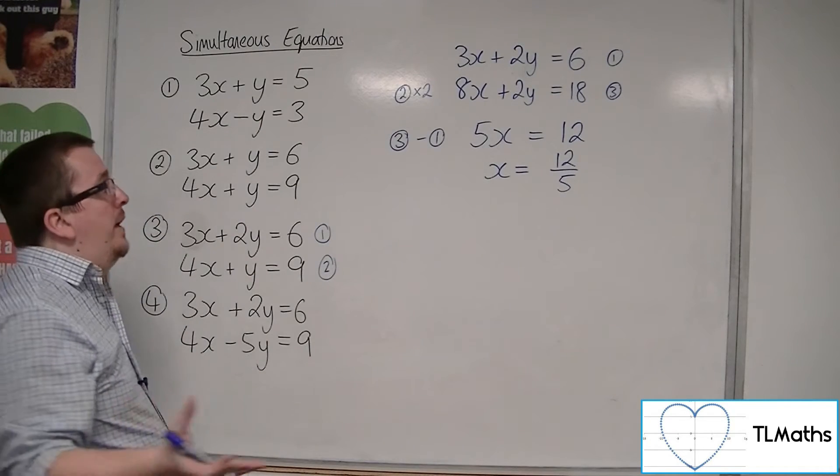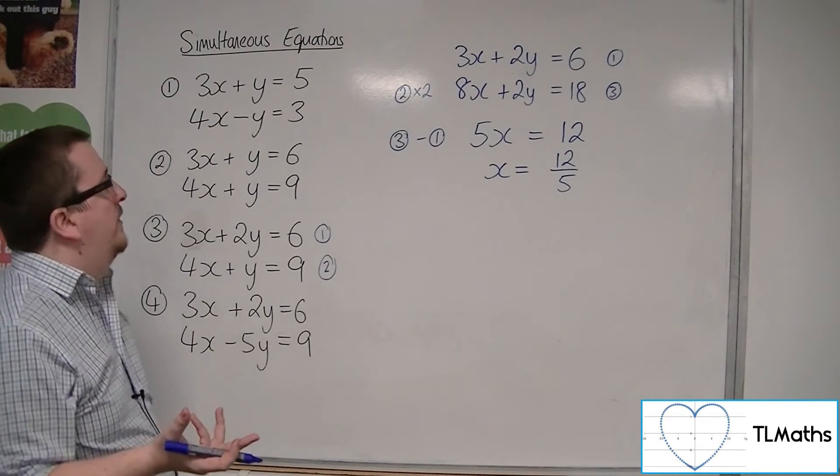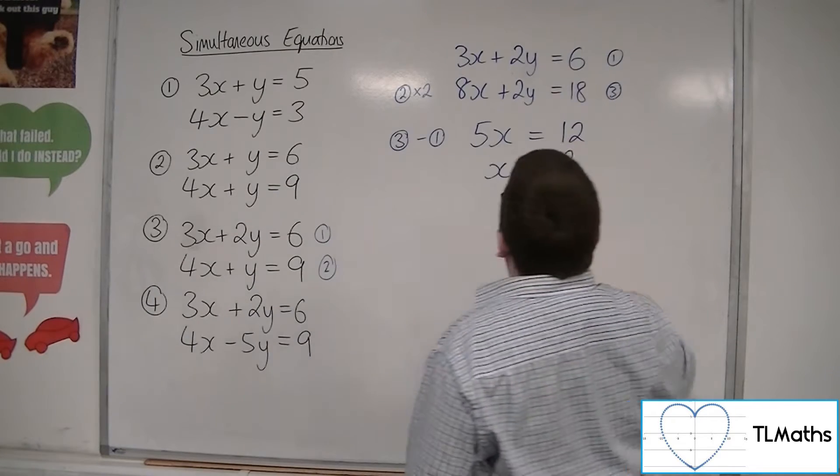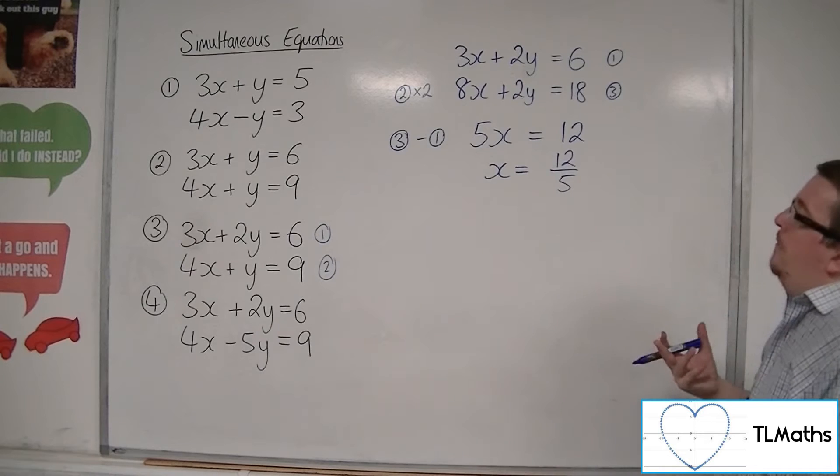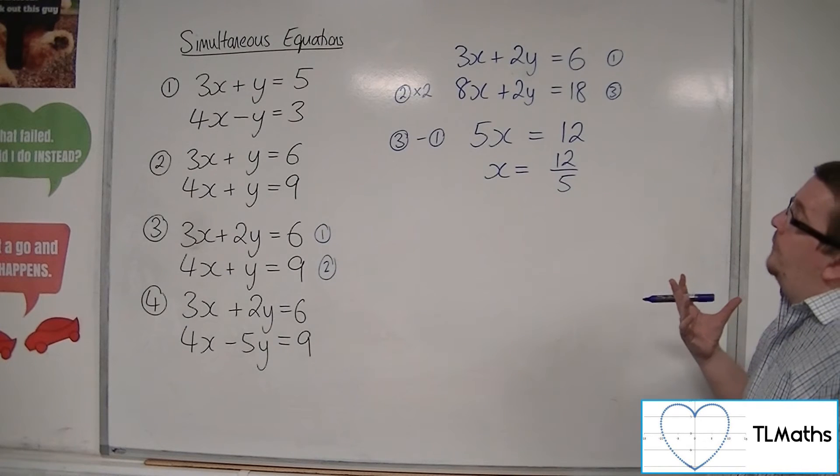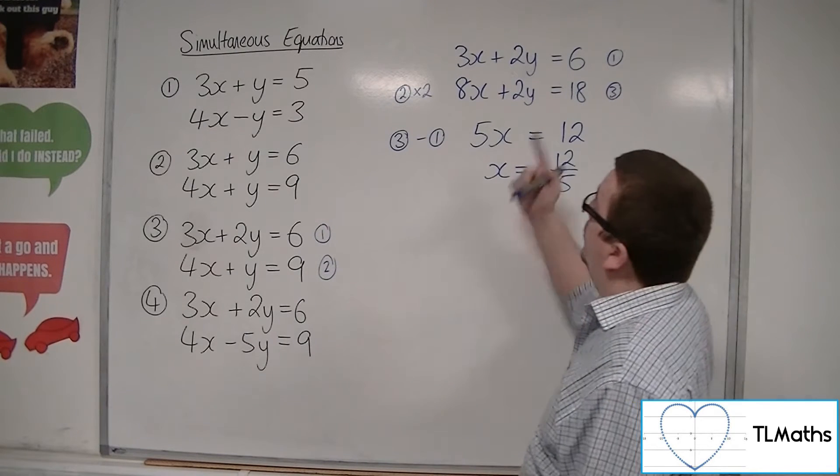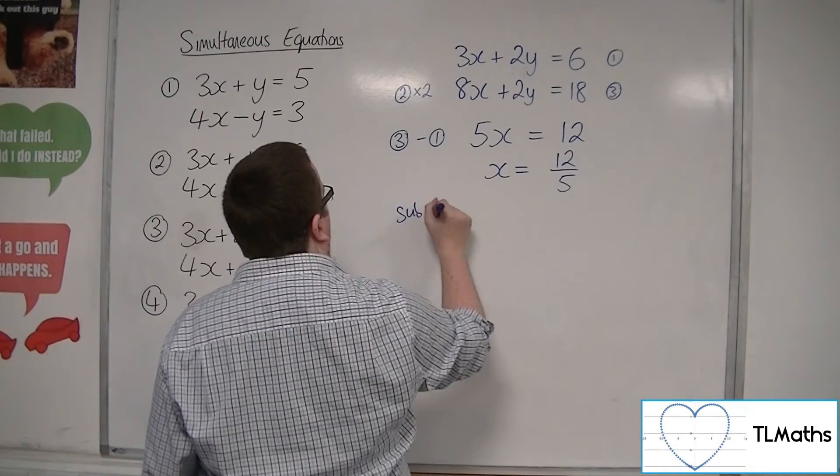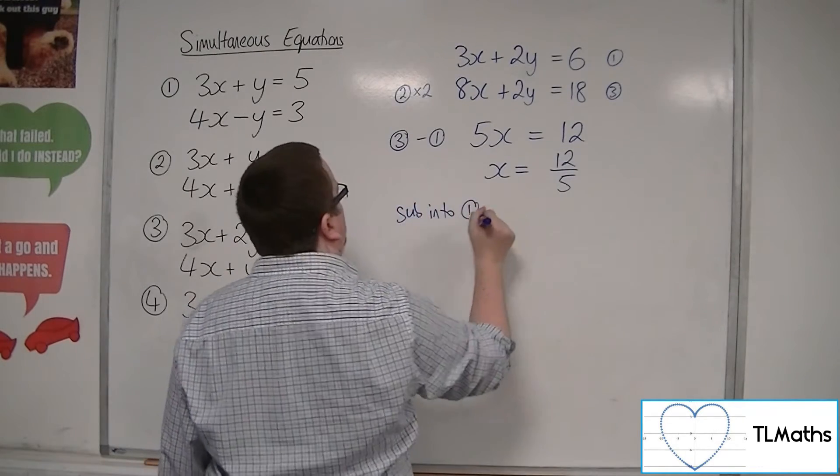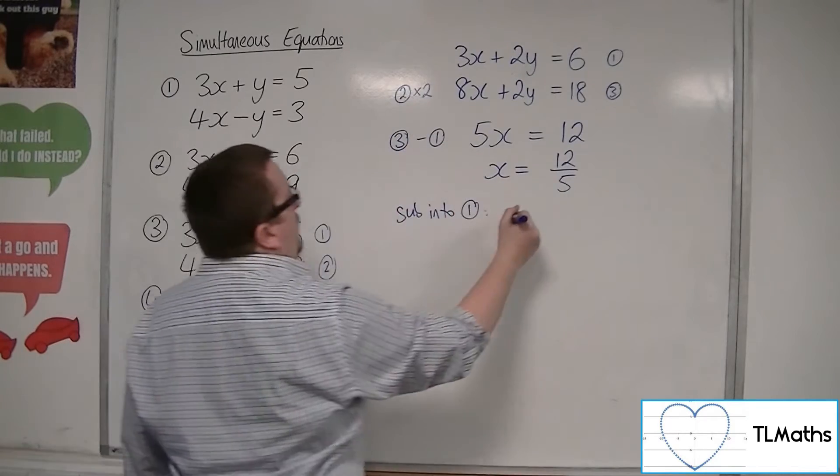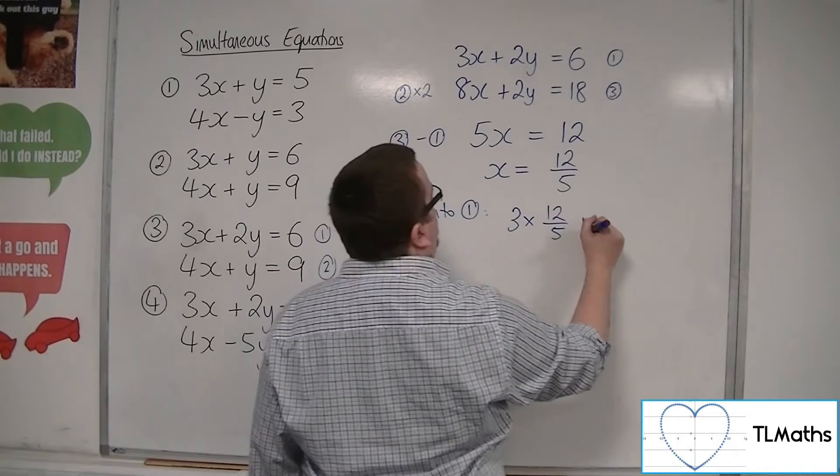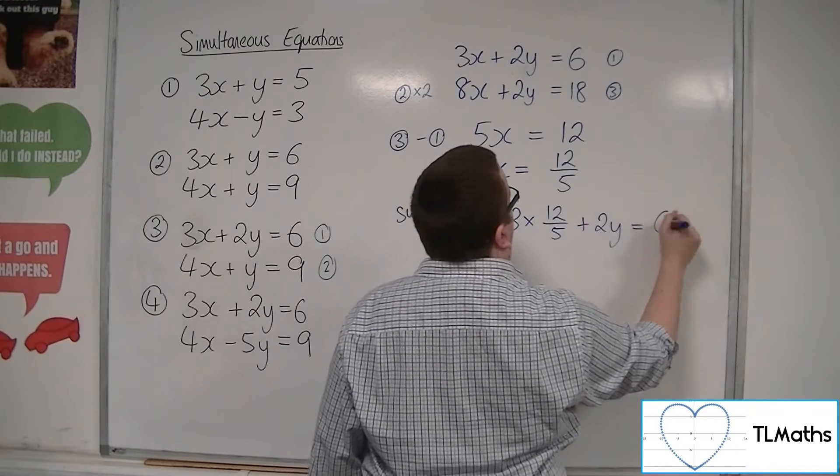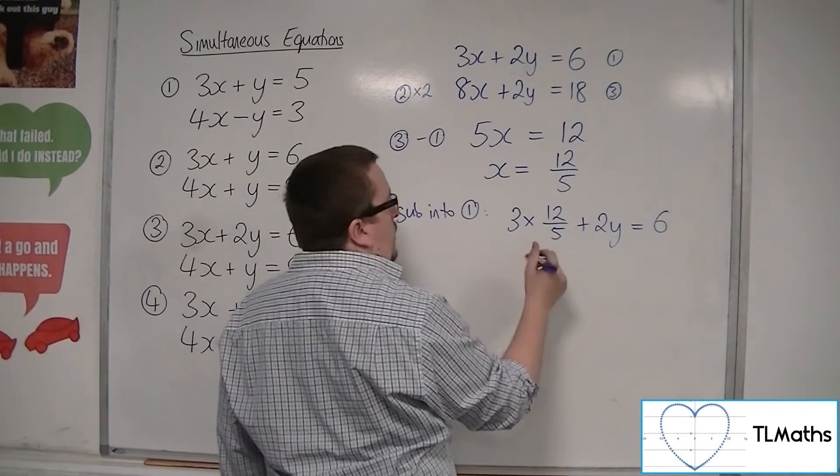So now I want to substitute into one of the two equations. I could substitute into number 1, that's probably the easiest of the two. Now I look at them. So sub into equation 1. So we've got 3 lots of x. So 3 lots of the 12 fifths plus 2y is equal to 6.